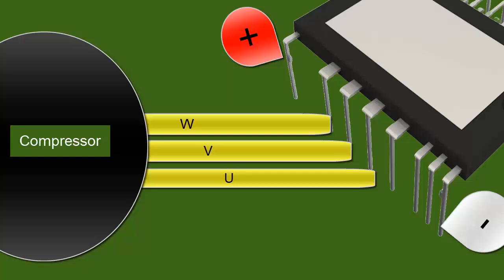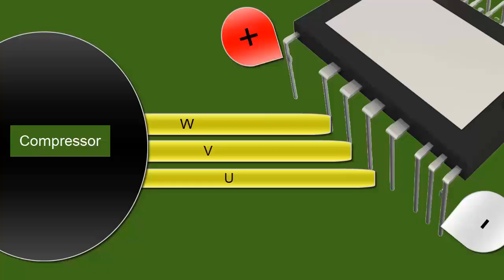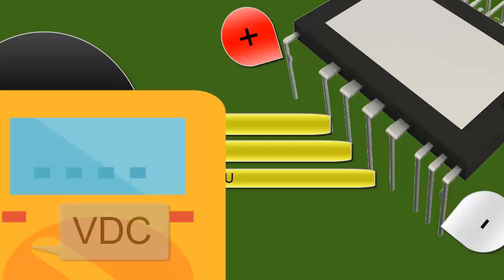Connect the electronic board to the power supply, taking the necessary precautions. Set the multimeter to the DC voltage scale at 400 volts.